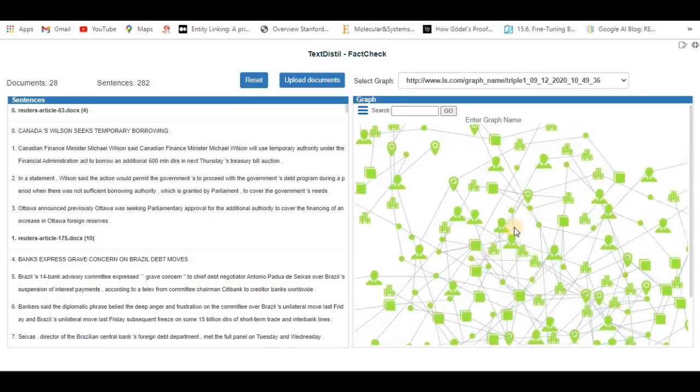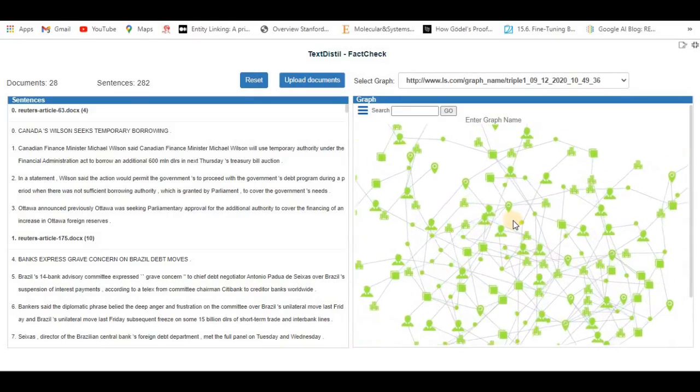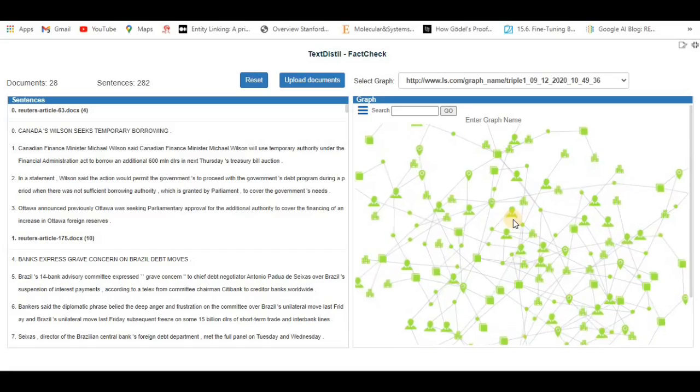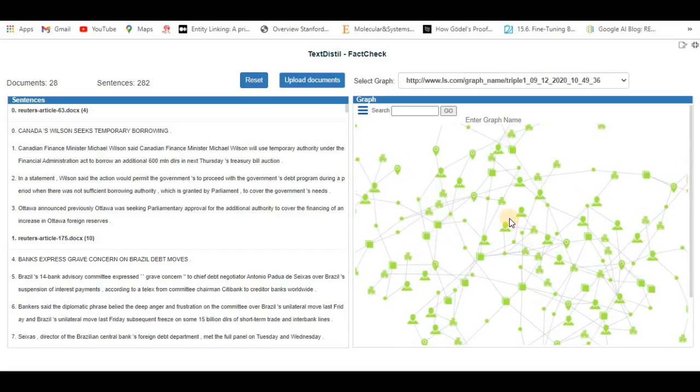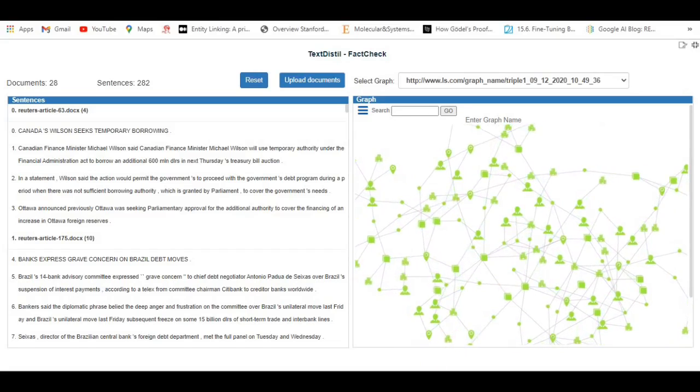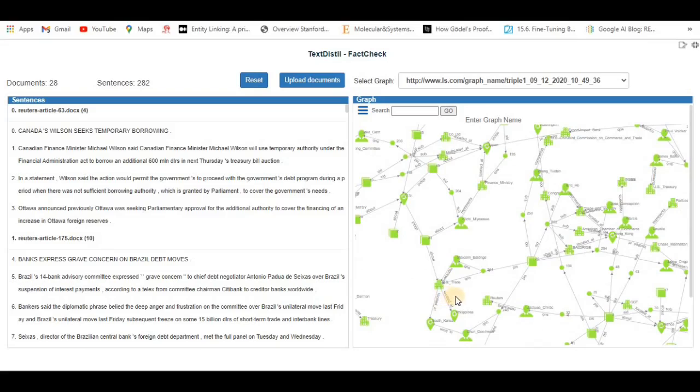This visual graph is the result of the SPARQL query against the RDF database. Each edge with subject predicate and object represents a triple extracted from the text on the left. Selecting the node of an edge in the visual graph highlights a block of text, like a sentence, in the left pane that produced the fact.